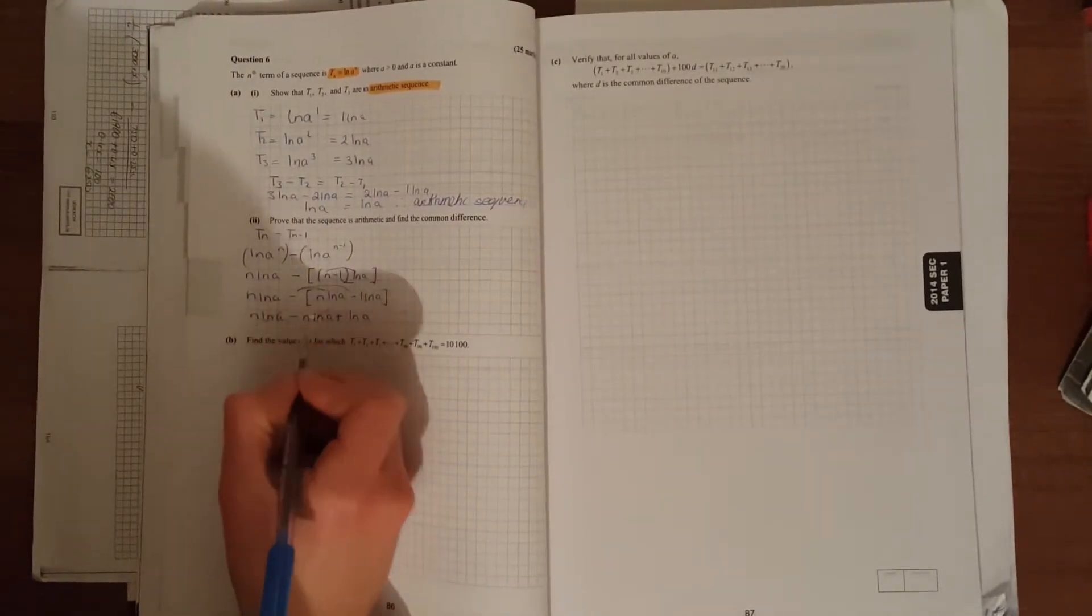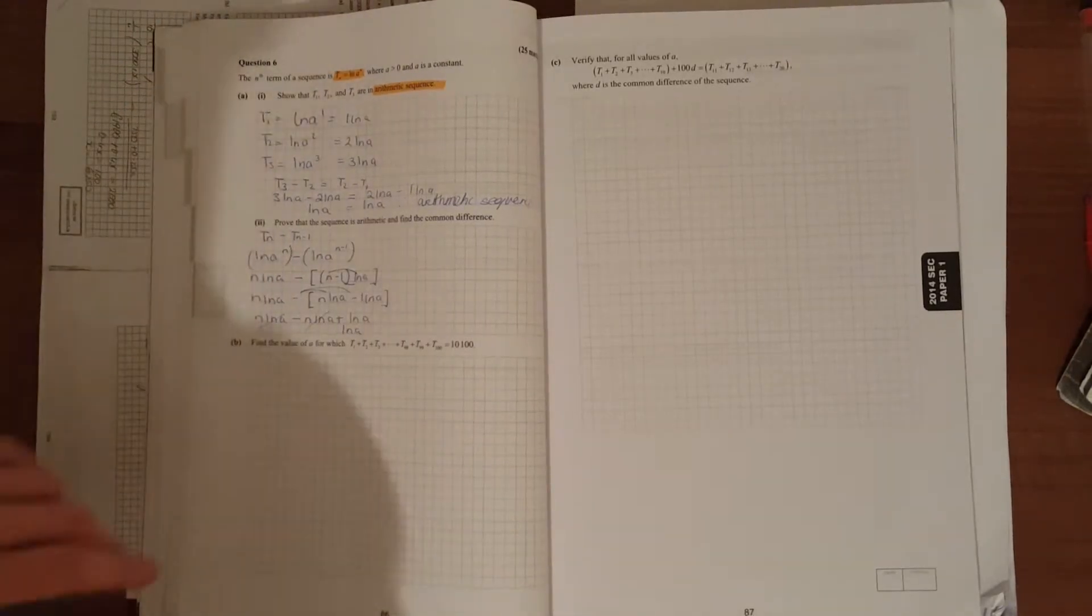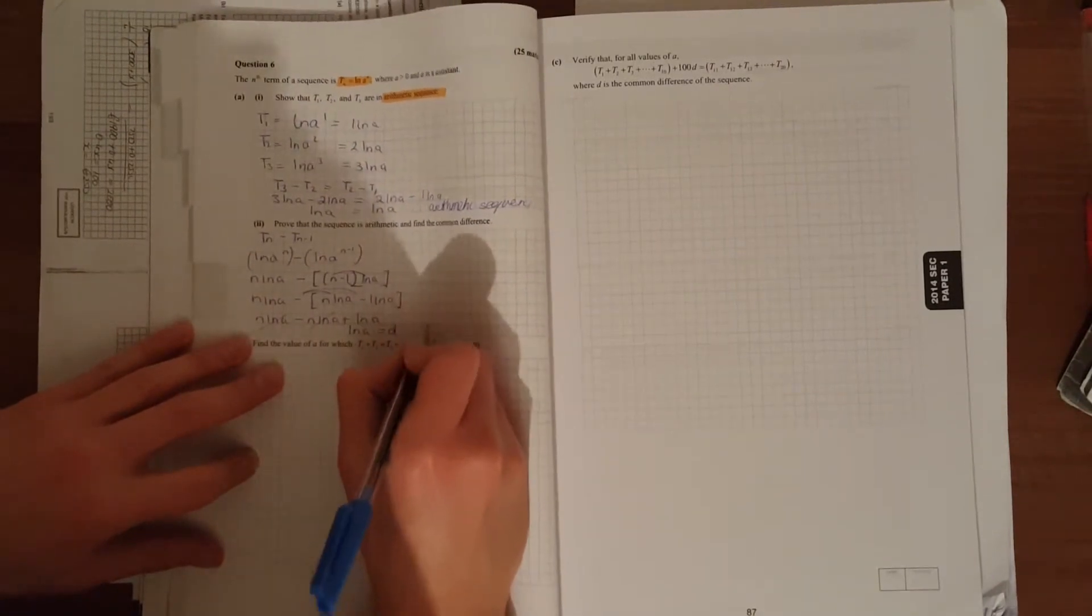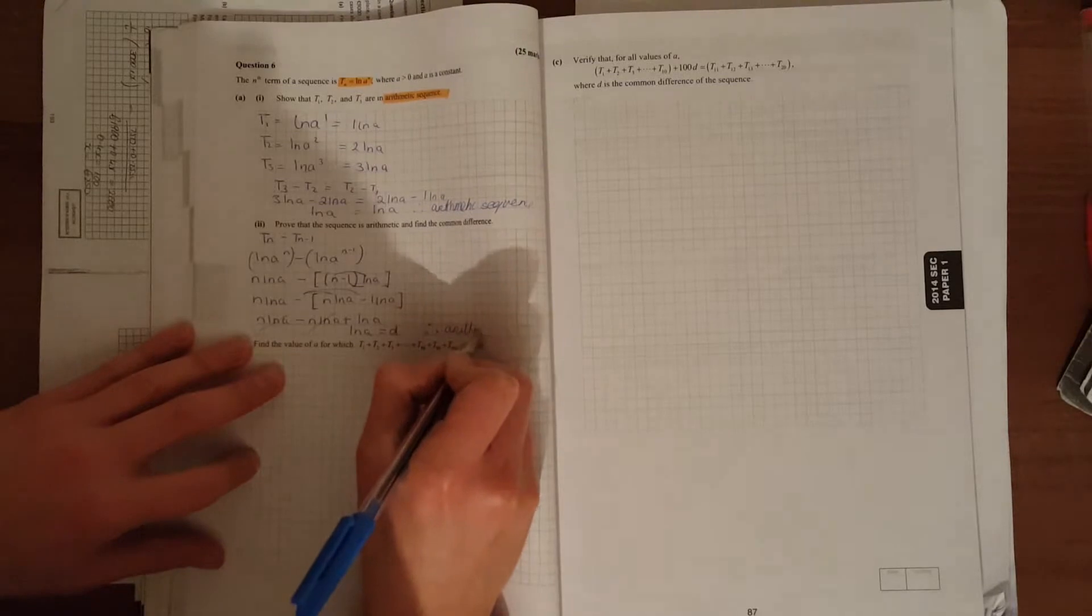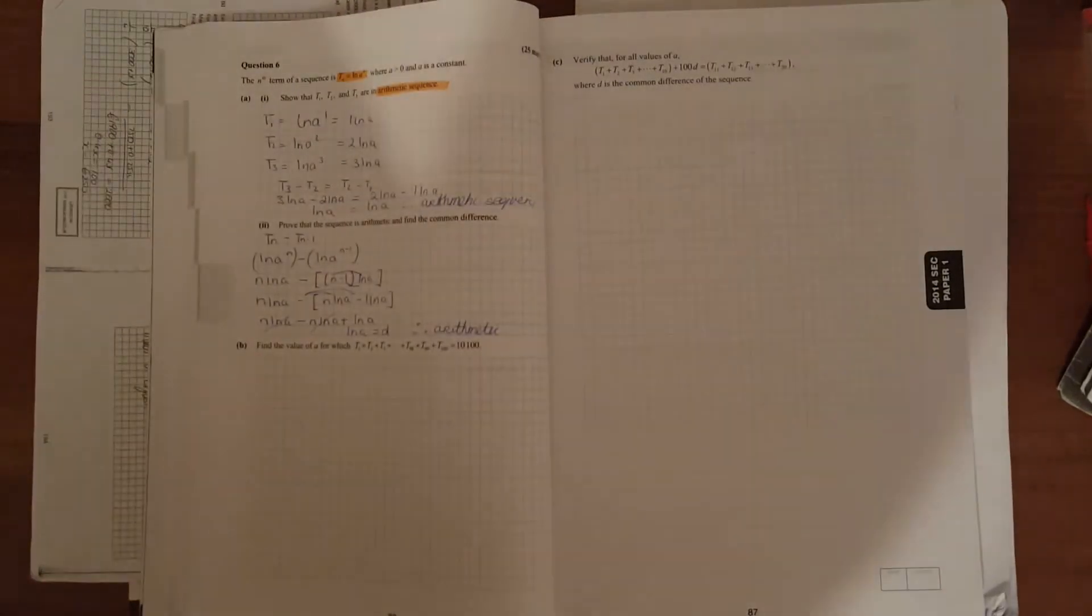So these two things cancel and you're left with ln(a). That's the same first difference, which is your d. Therefore, again, arithmetic or linear. Let's just see that match up with your part one.